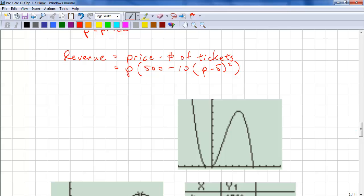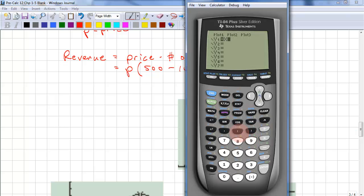Now, let's enter this on the calculator. x, 500 minus 10, bracket, x minus 5, bracket, bracket, squared, and then bracket.